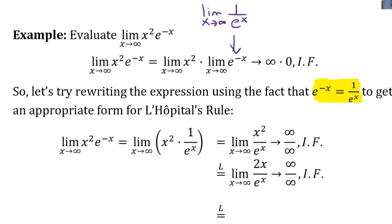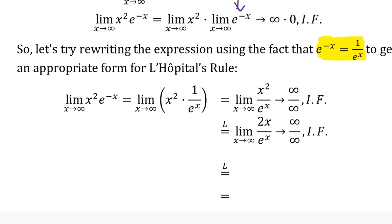But that's still going to be infinity over infinity. So we can apply L'Hopital's rule again. And what would we get this time? Good. 2 over e to the x. So the numerator there is going to 2. The denominator is going to infinity. So we're going to get 0 overall.